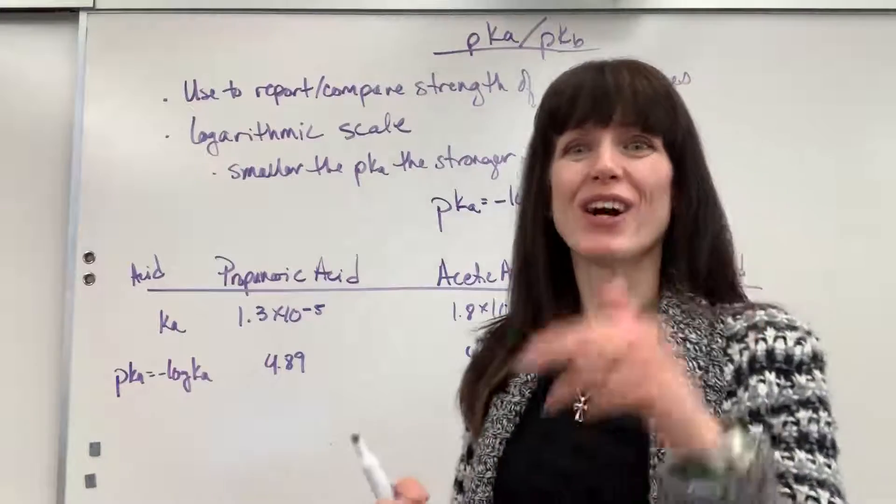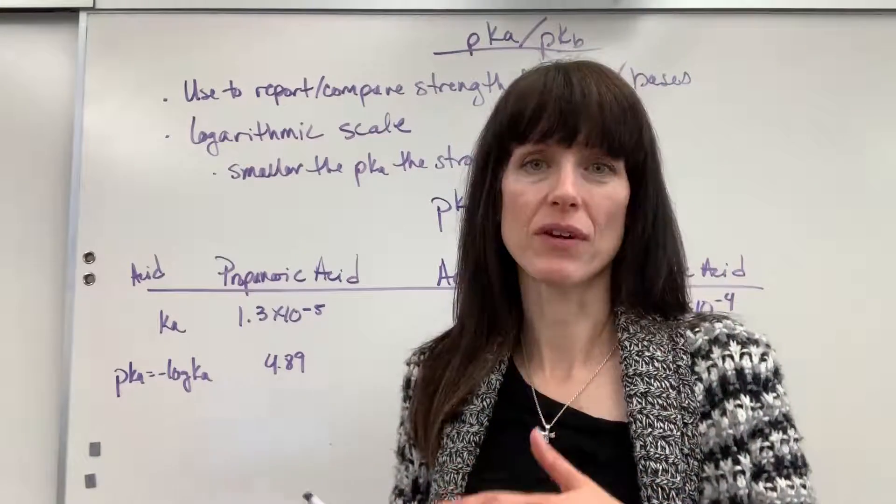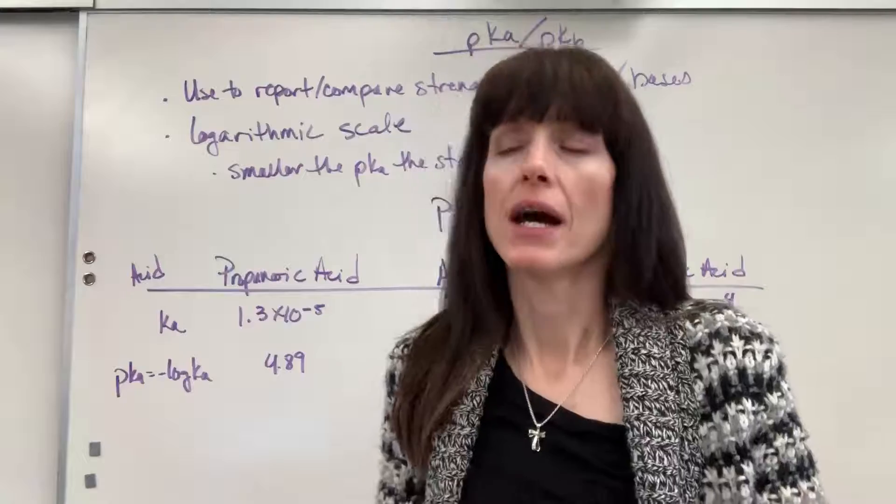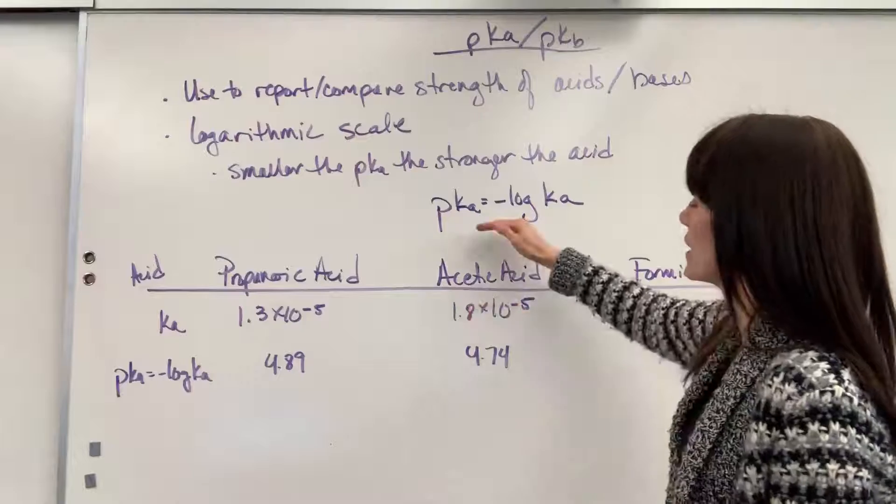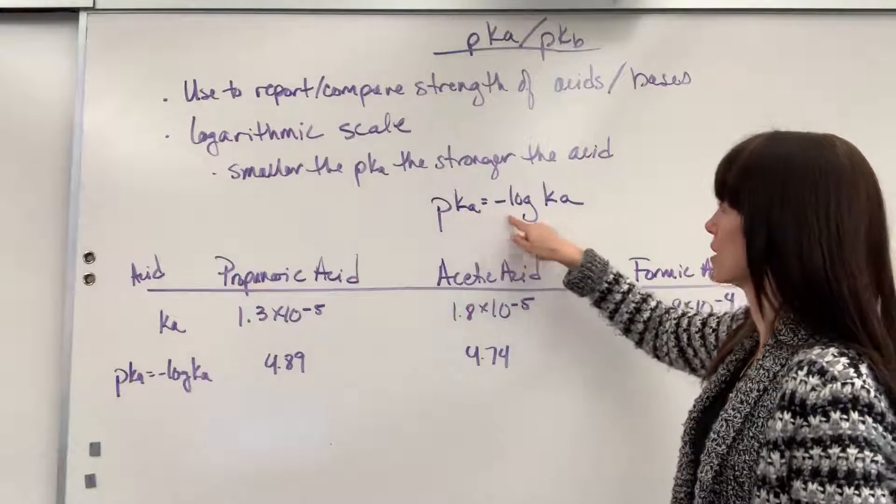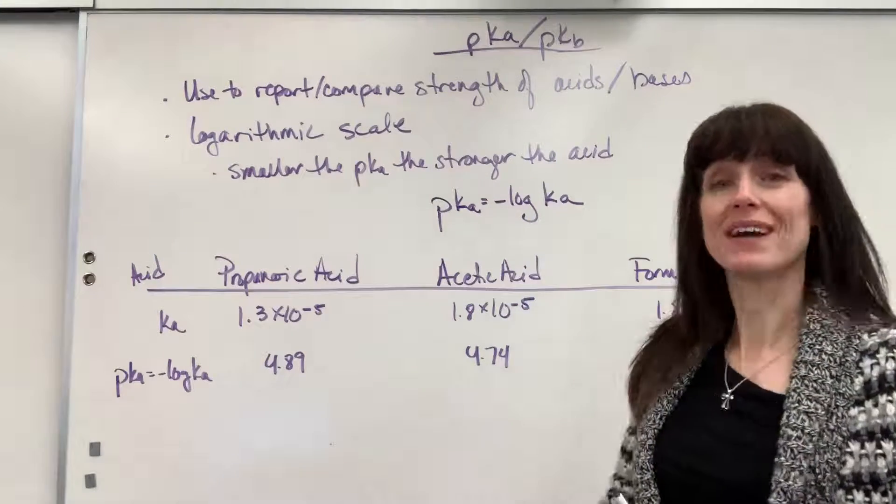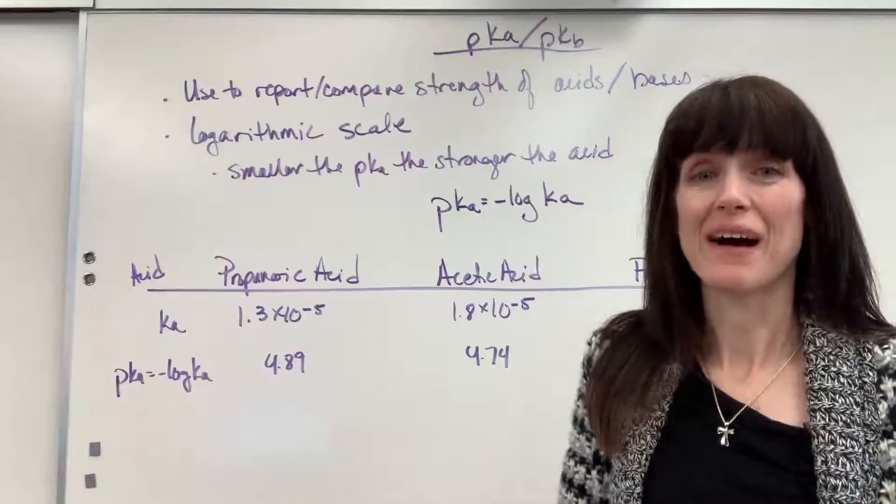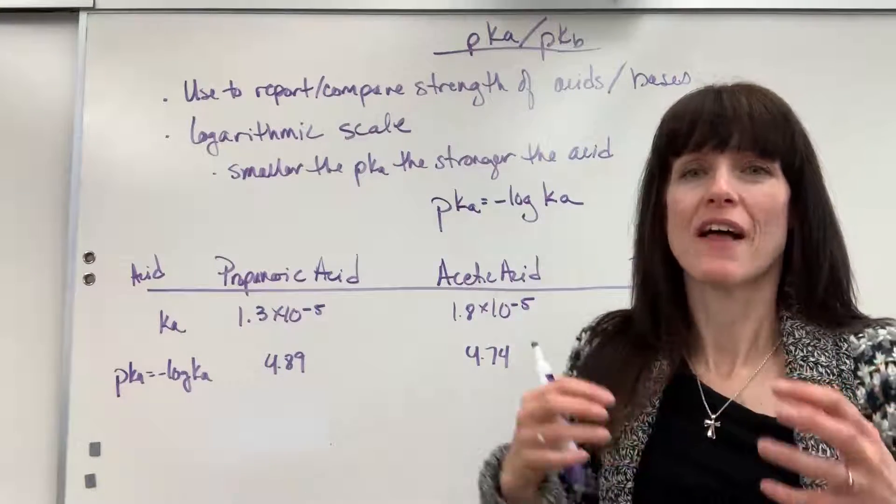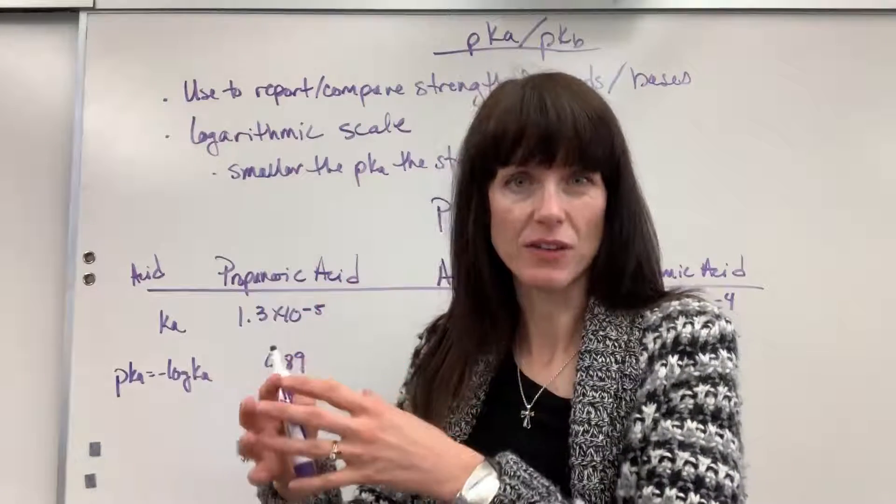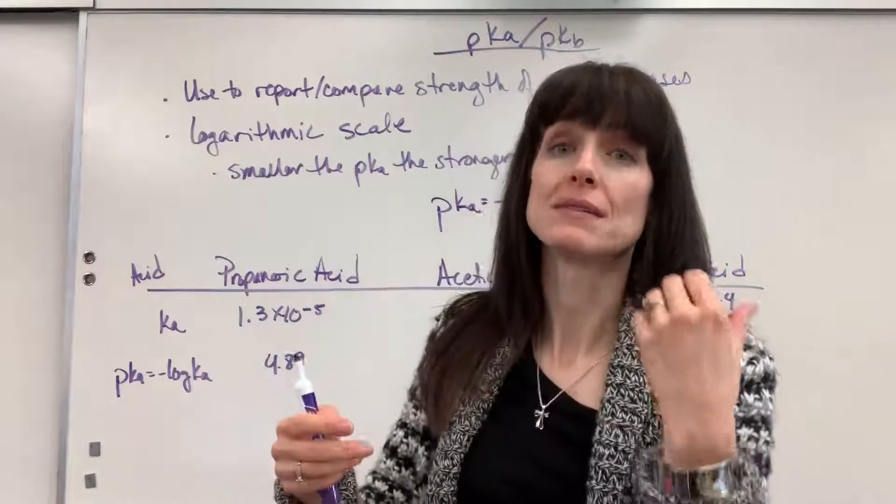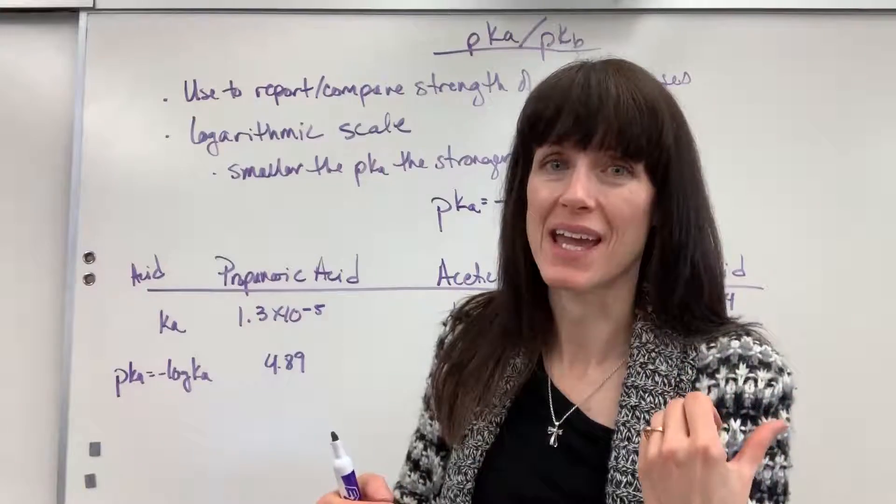You'll recall, the larger the Ka, the more product favored, the stronger the acid. Now, this is a logarithmic scale, just like pH. In fact, here is our formula: pKa equals negative log of Ka. Because it's logarithmic, the larger the Ka, stronger the acid, the smaller the pKa.